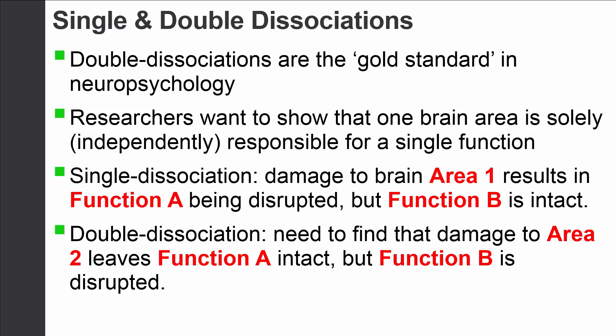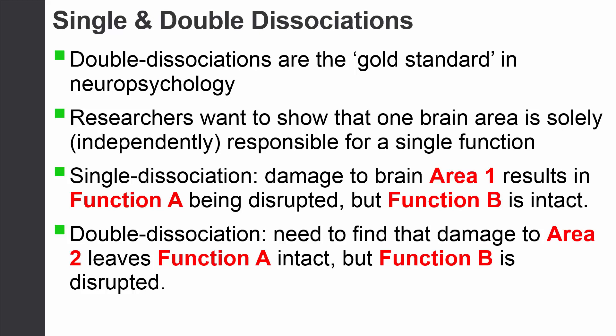With a double dissociation, what we show is that if we have two brain areas, each one has a very specific function. If we damage one brain area, we'll notice one set of problems but everything else remains intact. If we damage the other brain area, we'll notice a completely different set of problems. I'm just setting out the definitions here, and I want to put this into perspective with Broca's area and Wernicke's area.